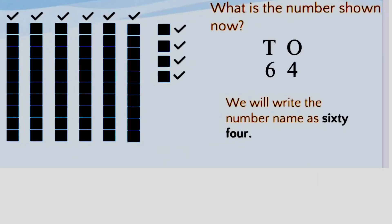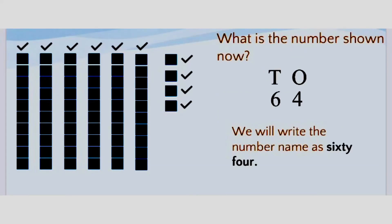The next number is 64. We count the blocks: 1, 2, 3, 4, 5, 6. So in the tens place the number is 6. Then how many ones are there? Counting: 1, 2, 3, 4. The number 4 comes in the ones place. The number is 64. The number name is spelled: S, I, X, T, Y, F, O, U, R — Sixty-four.